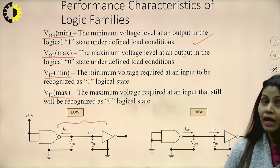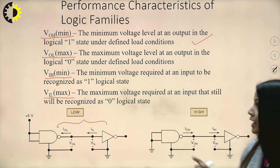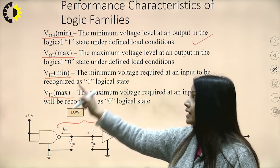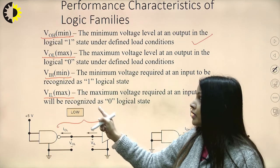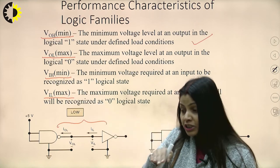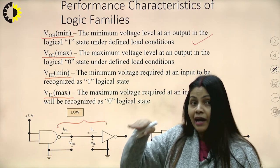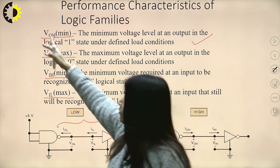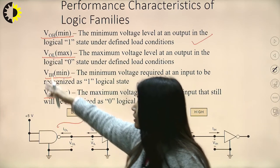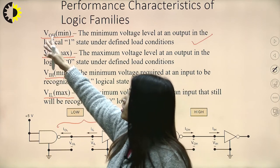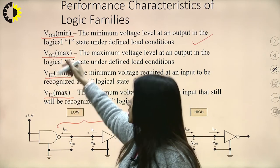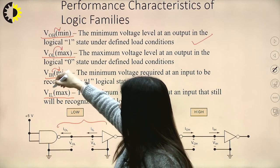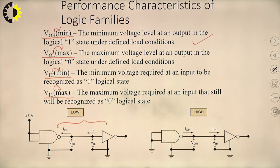Coming to VIL maximum: the maximum voltage for input to be recognized as logical state 0. For 0, it is the maximum, and for 1, it is the minimum. The trick to learn all these things is to first understand these notations — whenever we are talking of high, we are talking of minimum, and whenever we are talking of L, we are talking of maximum.